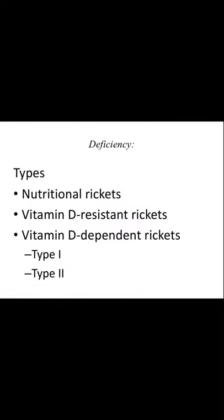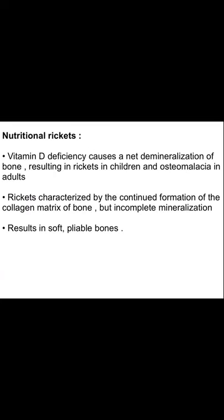Deficiency diseases related to vitamin D include rickets — nutritional rickets, vitamin D resistant rickets, and vitamin D dependent rickets of different types. Vitamin D deficiency causes a net demineralization of bone, resulting in rickets in children and osteomalacia in adults.